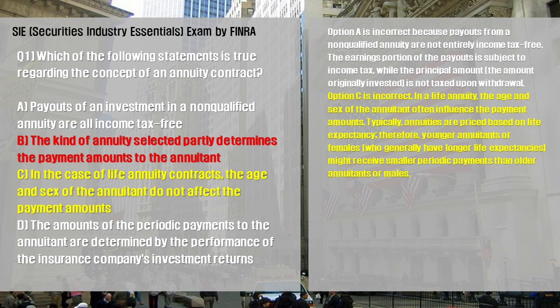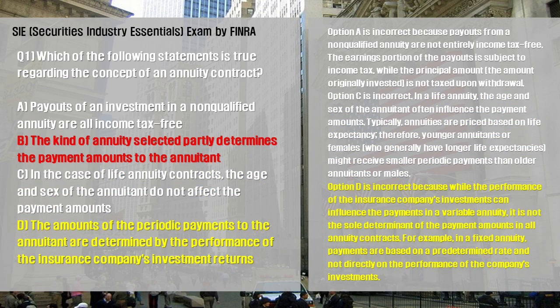Option C is incorrect. In a life annuity, the age and sex of the annuitant often influence the payment amounts. Typically, annuities are priced based on life expectancy; therefore, younger annuitants or females, who generally have longer life expectancies, might receive smaller periodic payments than older annuitants or males. Option D is incorrect because while the performance of the insurance company's investments can influence payments in a variable annuity, it is not the sole determinant in all annuity contracts. For example, in a fixed annuity, payments are based on a predetermined rate.